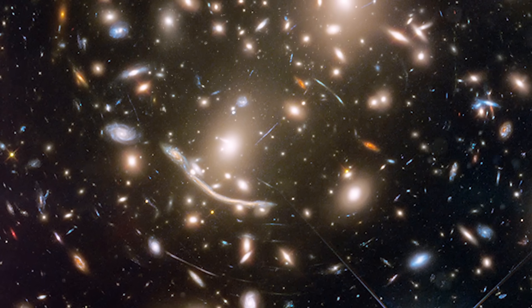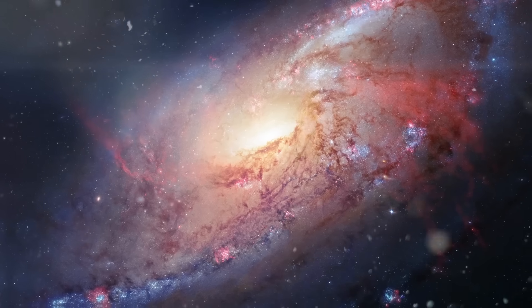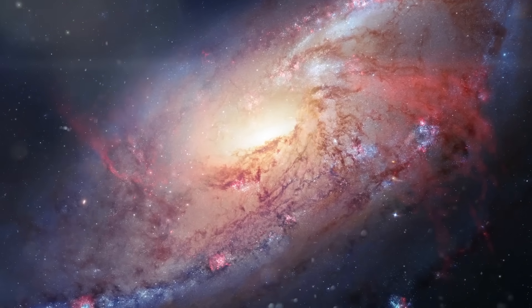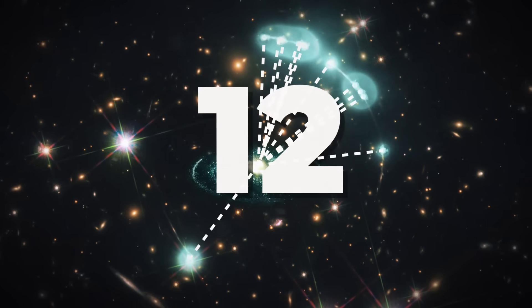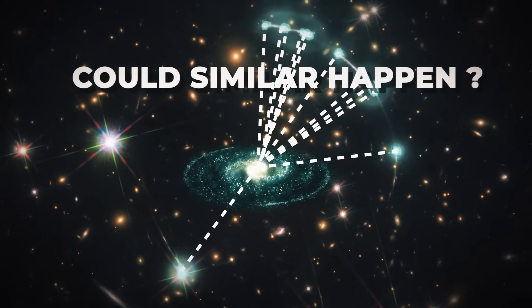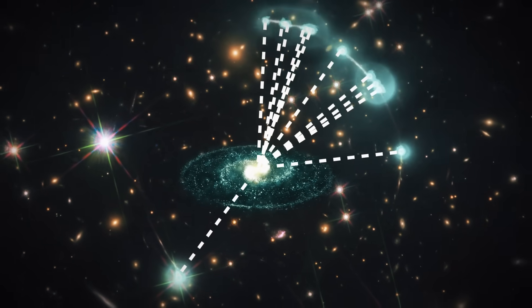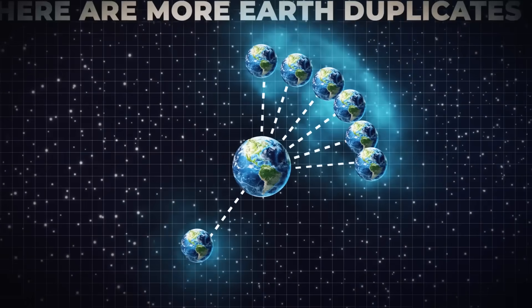The discovery sheds light on a pivotal period in the history of our universe, the Age of Reionization. How did it come to be that there are 12 identical galaxies in the universe? Could something similar happen in our galaxy? Is it possible that there are more Earth duplicates in space? Let's find out.